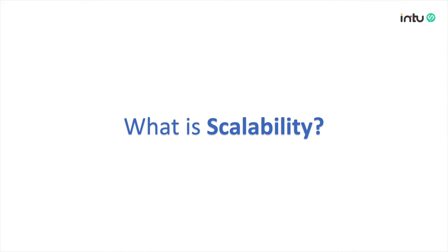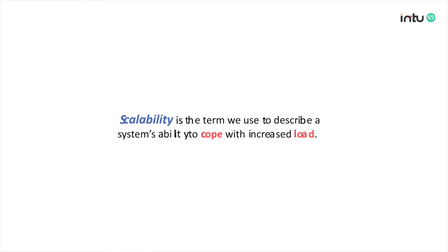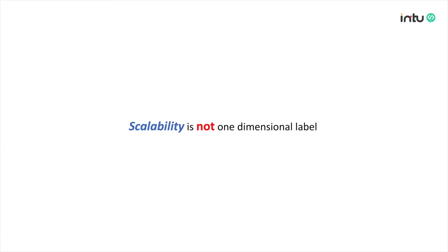So what is scalability? By definition, scalability is the term we use to describe a system's ability to cope with increased load. There can be many different types of loads for a given system, so it doesn't really make sense to attach a one-dimensional label and say something like 'this system is scalable.' Rather, we should add a bit more context and say: this system is scalable up to 100 million requests per second, or this system is scalable up to 10,000 concurrent users.